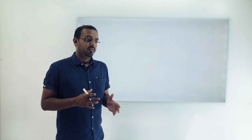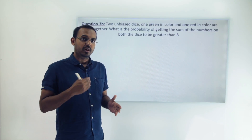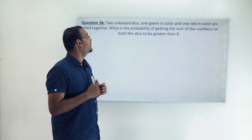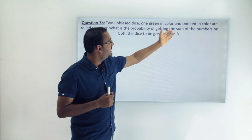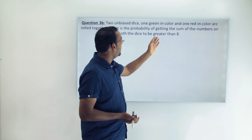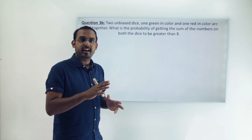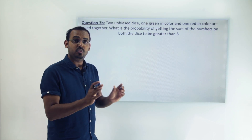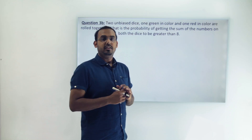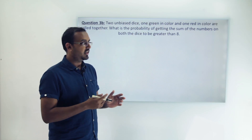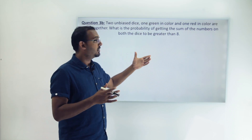Now let's look at the second part of this question. We keep the same experiment — rolling two unbiased dice, one green and one red — but with a different question. This time we are asked to calculate the probability of getting a sum of the numbers on both dice that is greater than 8.